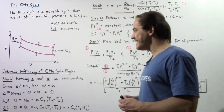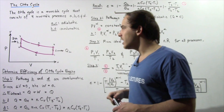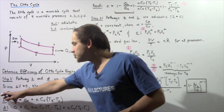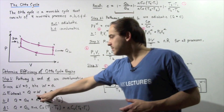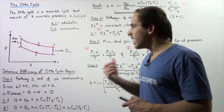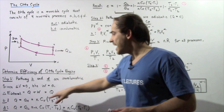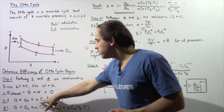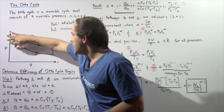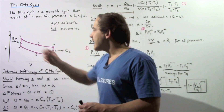In step 1, pathways B and D are isovolumetric, meaning the change in volume is zero. Because the change in volume is zero, the work done during processes B and D is also zero. According to the first law of thermodynamics, the change in internal energy must equal Q, since W is zero. In process B, QH flows into our system and is given by: N multiplied by the molar specific heat at constant volume Cv, multiplied by the difference in temperature T3 minus T2, where T3 is the temperature at position 3 and T2 is the temperature at position 2.